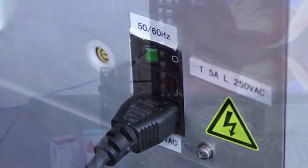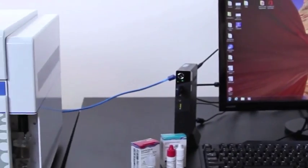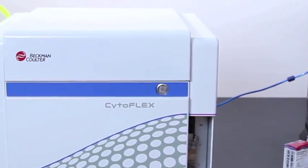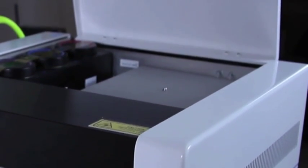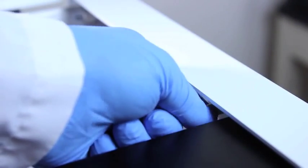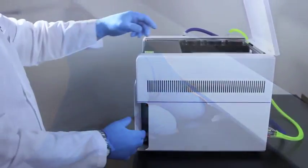Once every six months, Beckman-Coulter recommends that you replace the deep clean solution. In order to access the deep clean bottle, you must first remove the right side panel. Open the top cover of the CytoFlex flow cytometer and loosen the capture thumb screws at the top.